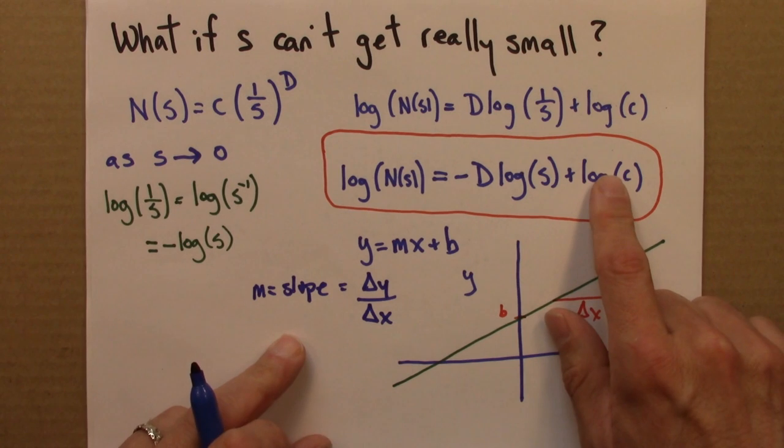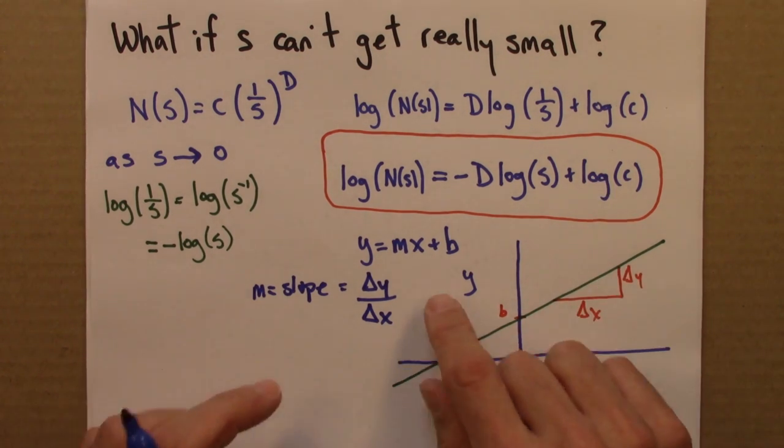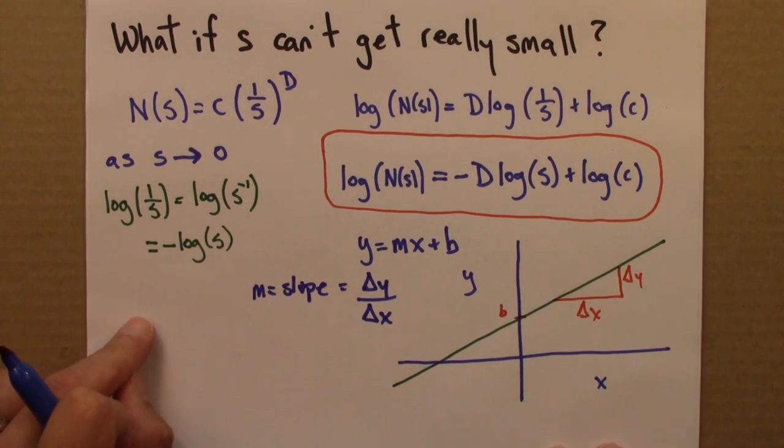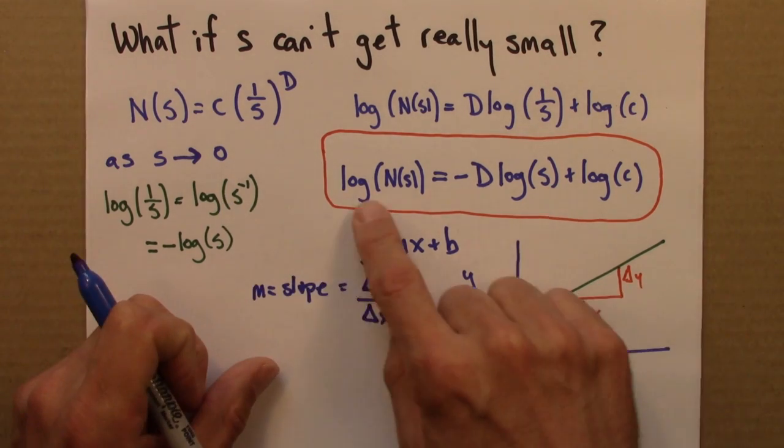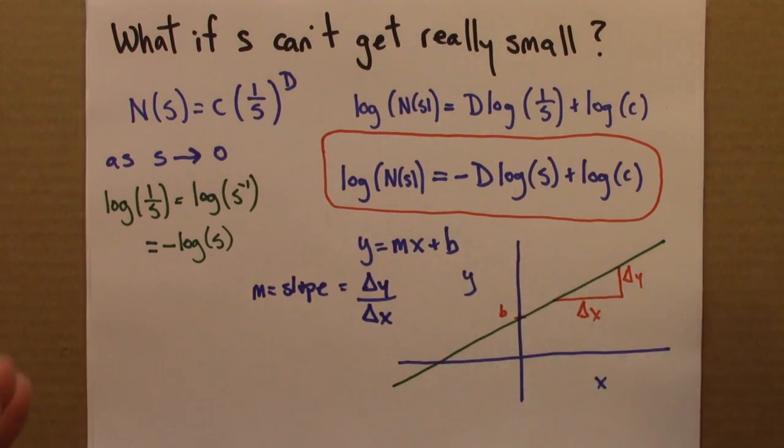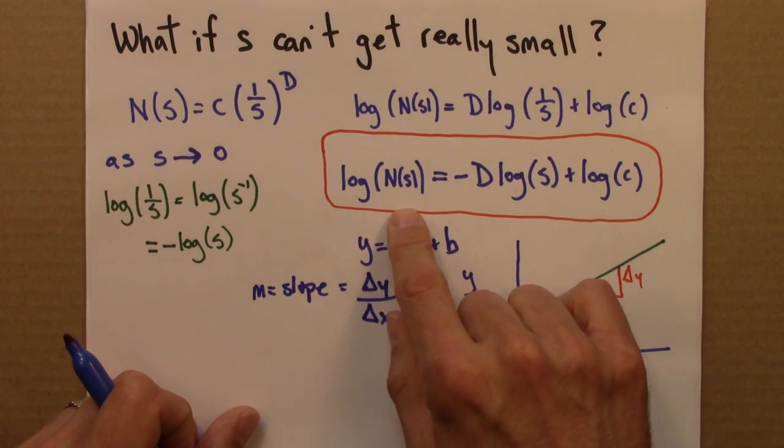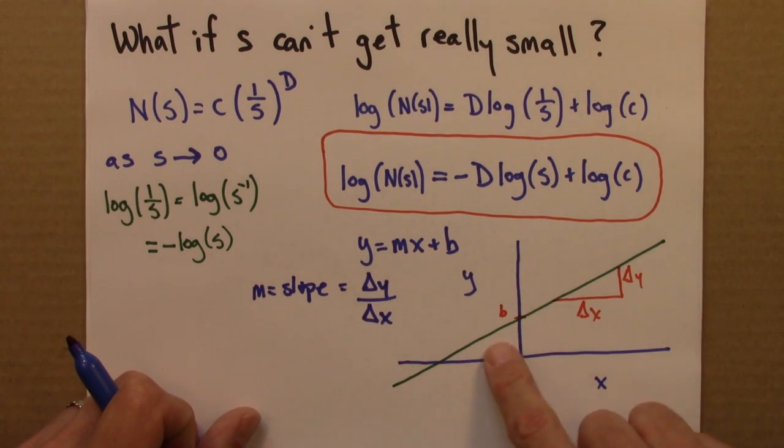So why do I claim this is useful? Here's what we can do. We can take some s and N(s) measurements, like what we've been doing throughout this subunit. Then we can take their logarithms, and if we plot them, if we plot the logs of those pairs of numbers, we should see a straight line behavior.